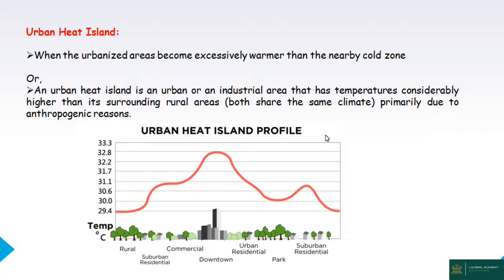The urban heat island effect concept is explained with a diagram — the urban heat island profile. In terms of local locations, for example the rural area, there are no tall building structures, no concrete, etc. From the rural area, when the urbanized area nearby becomes excessively warm, we call it the urban heat island effect.